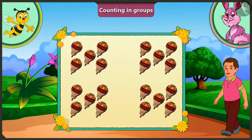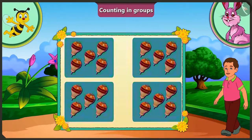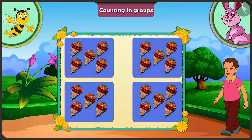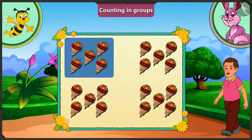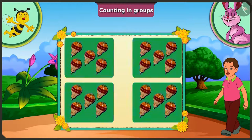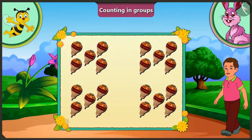Oh yes, I don't have to tell how many groups there are, but I have to tell how many tops there are in total. Honey, do you understand that we don't have to count the groups of five every time? If we know the total number of items in one group, then we can find out the total number of items in different groups. Yes, I have understood it very well.